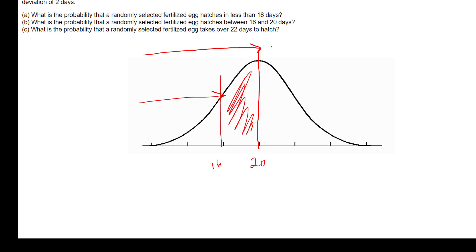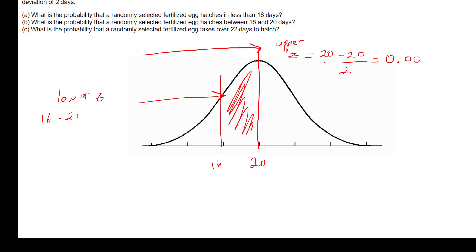We call these the upper z and lower z. The upper z = (20 − 20) / 2 = 0. The lower z = (16 − 20) / 2 = −4/2 = −2. So 16 is exactly two standard deviations below the mean.